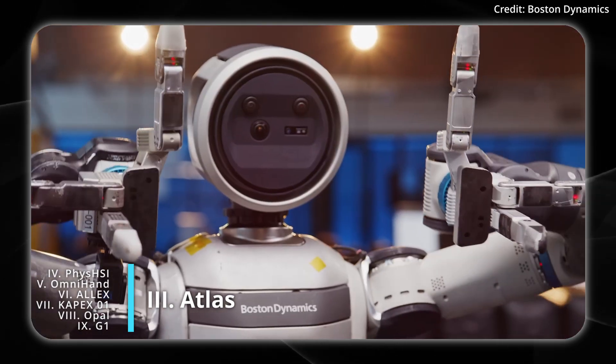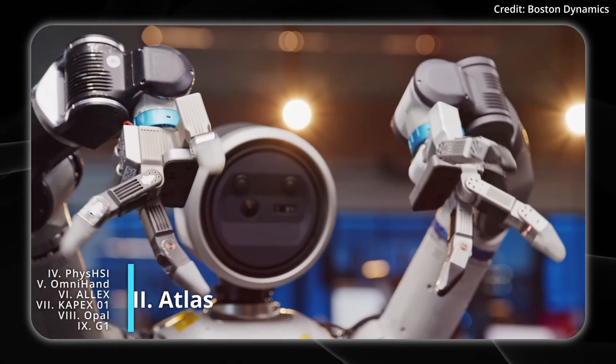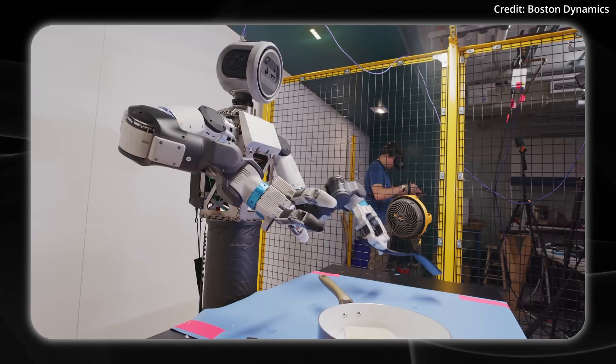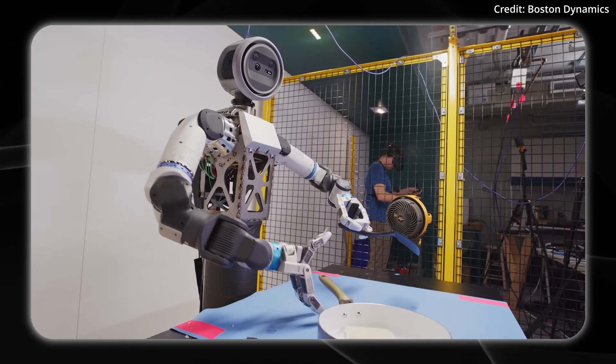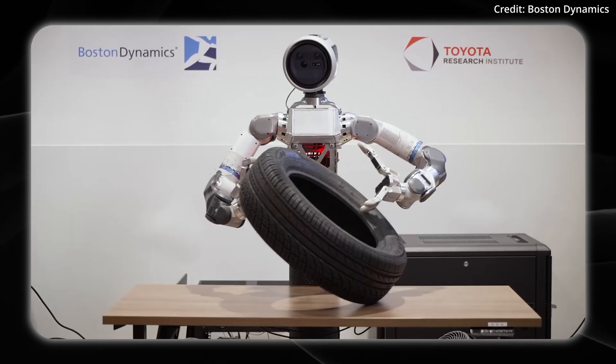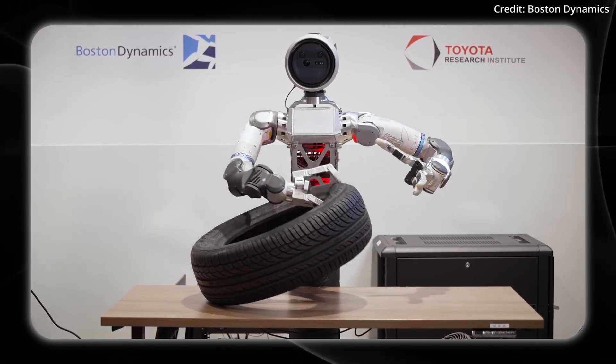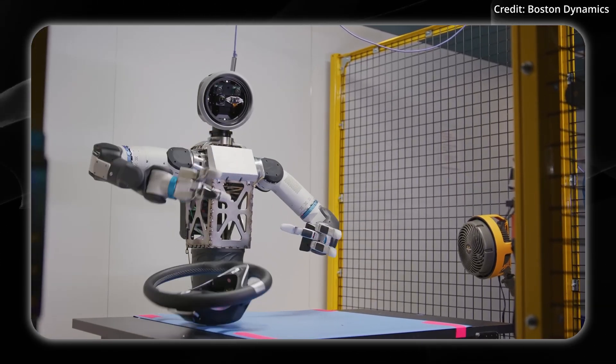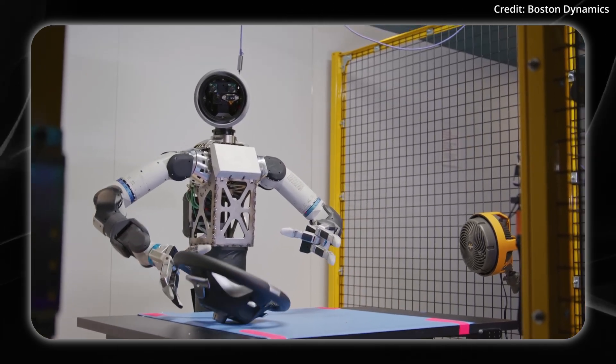It features 7-degree-of-freedom hands with tactile-sensing fingertips as well as palm-mounted cameras, allowing Atlas to handle everything from heavy automotive parts to delicate objects like coffee cups. And the gripper can even detect when it's lost its grip or dropped an object entirely.